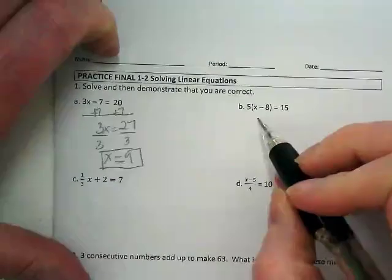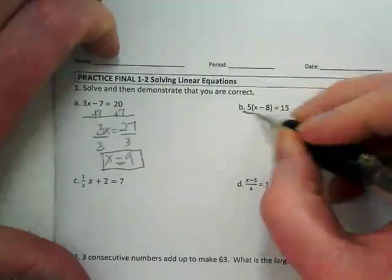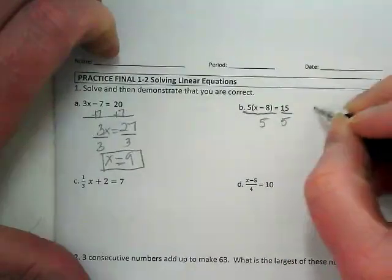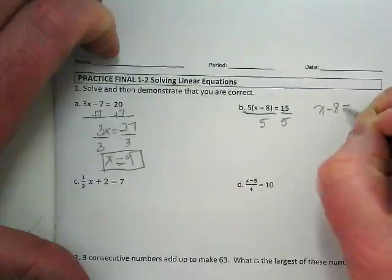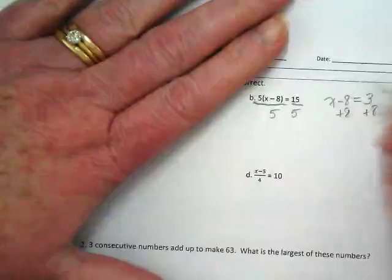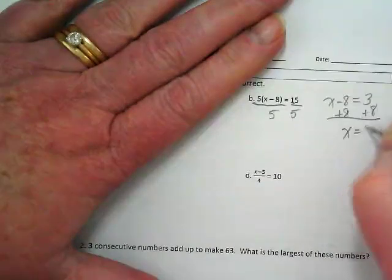Okay, when I look at this, I could start by distributing the 5, or I could just divide the 5 away. And then I get x minus 8 is equal to 3, and I end up with x is equal to 11.